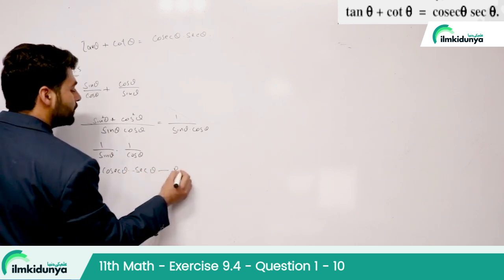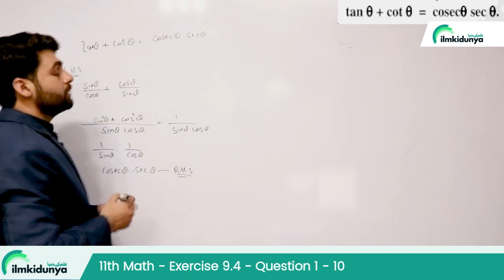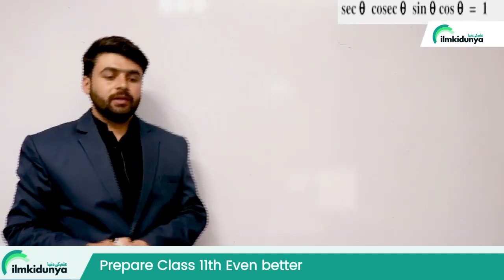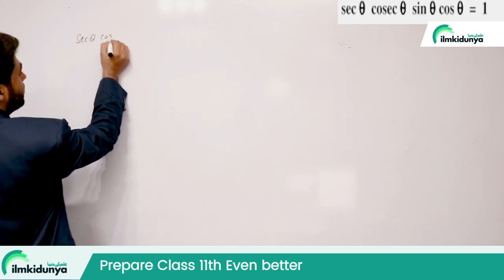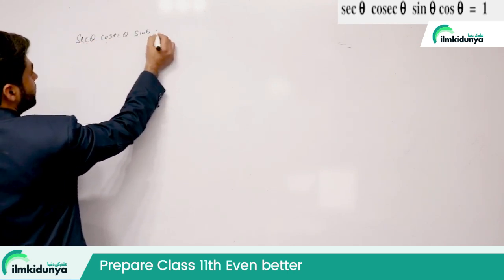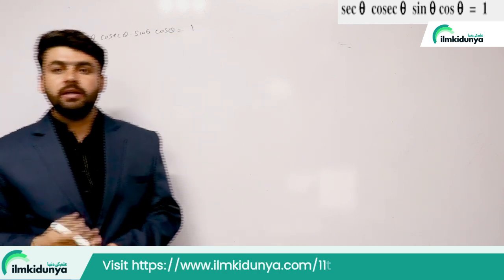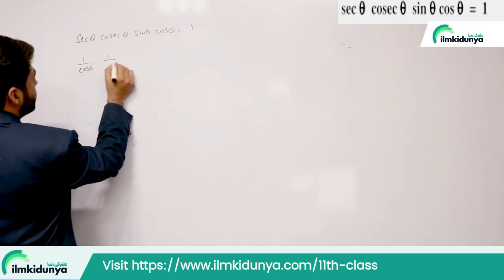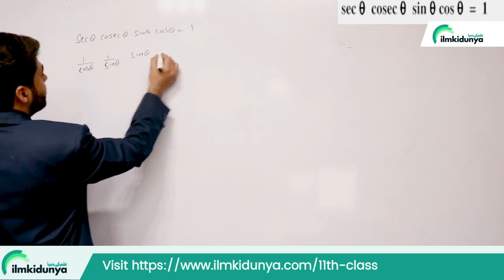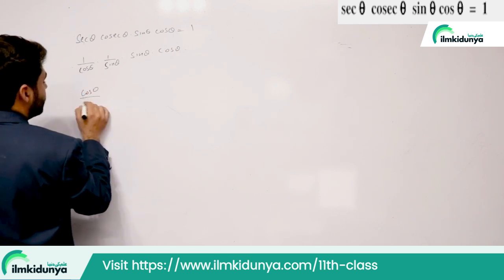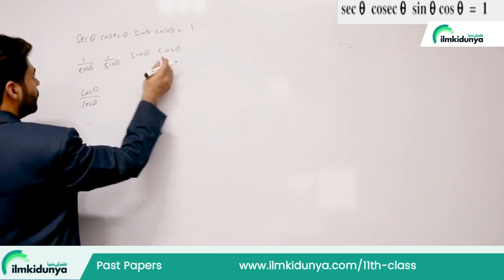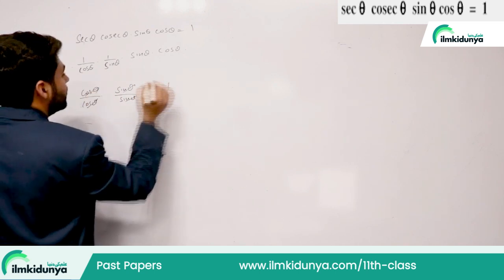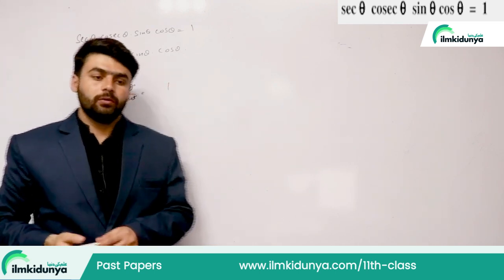We can rewrite this as 1 over cos θ times 1 over sin θ, which gives us sec θ · cosec θ. So the answer equals 1 over sin θ · cos θ, where sin cancels and cos cancels appropriately, ultimately giving the right-hand side. Hence proved.